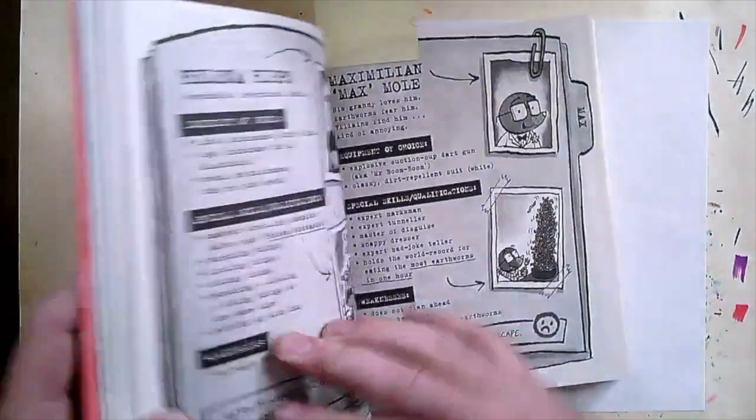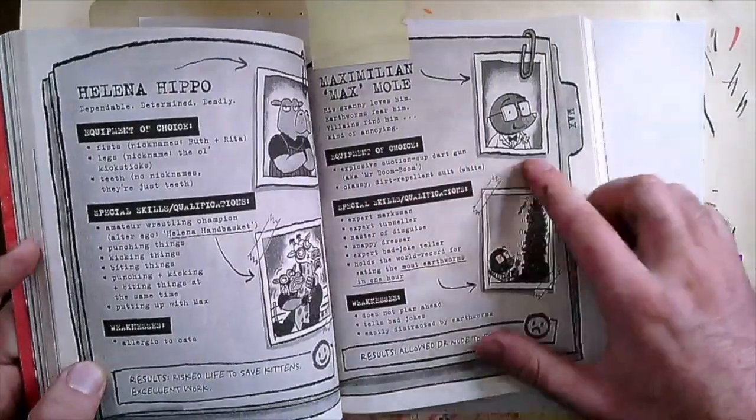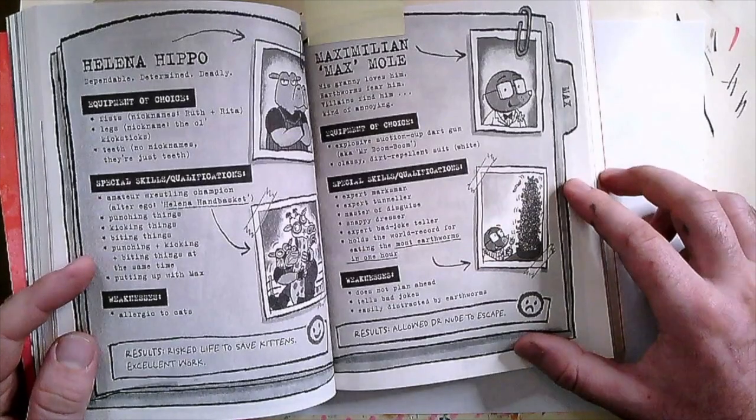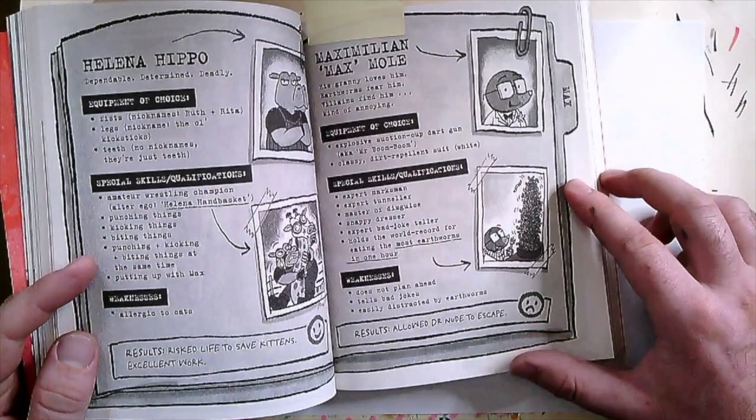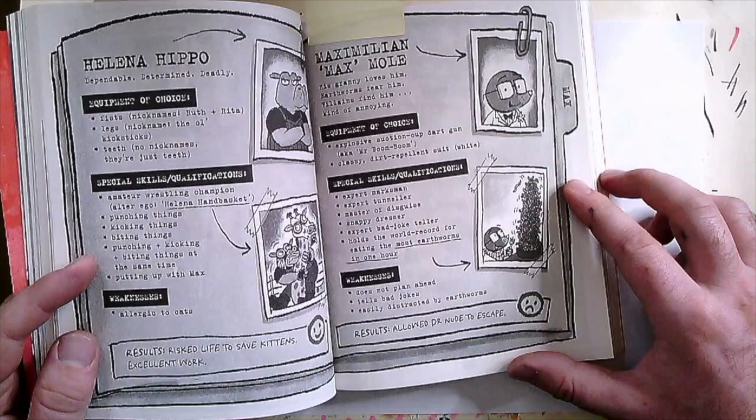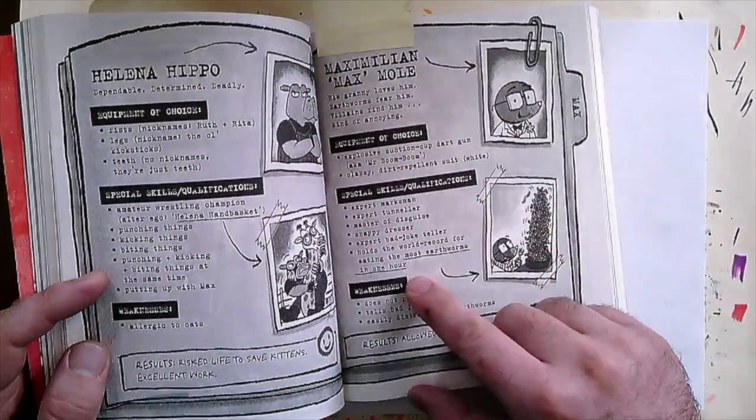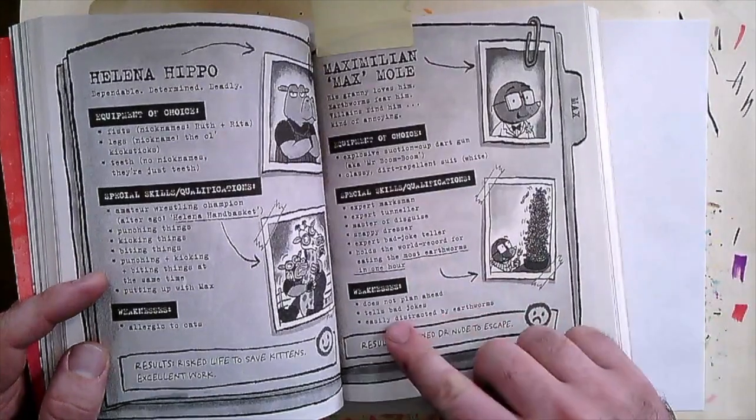You can see it on the front cover here. His classy dirt-repellent suit in white. Special skills and qualifications: he's an expert marksman, expert tunneller, master of disguise, snappy dresser, expert bad joke teller, and holds the world record for eating the most earthworms in one hour. His weaknesses: he does not plan ahead, tells bad jokes, and is easily distracted by earthworms.